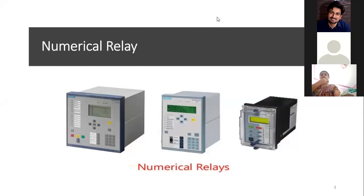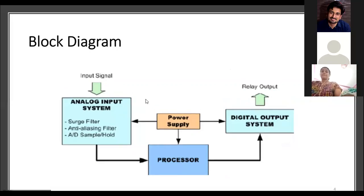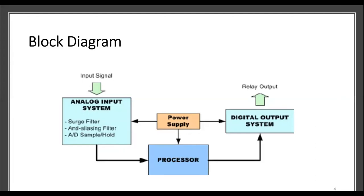Now we will discuss the block diagram of the numerical relay, which is important from an exam point of view. In the numerical relay's block diagram, we will discuss different components. First is the analog input system — the input signal will be in analog form; voltage, current, or resistance can be used. In the analog input system, we will have different types of filters and a sample-and-hold circuit. Then we have the power supply block, then the processor, and finally the digital output system, which includes indicators and relay output.